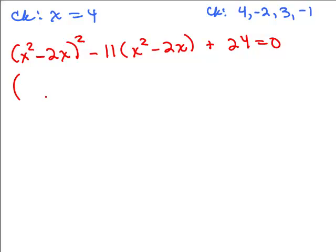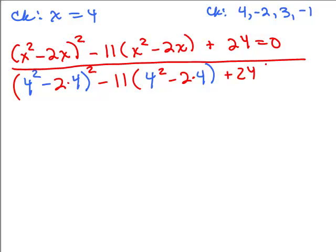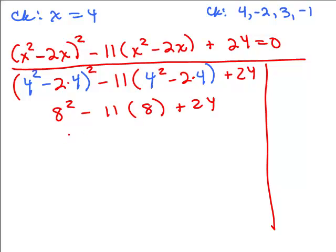We're going to plug in 4 for x. So I have (4²-2×4) and that whole thing is squared. And then I'm going to put 4²-2×4, and I'm going to add 24. And we're going to simplify that. So I have to simplify in the parentheses. That's going to be 16-8, so that's 8². And then here in parentheses I'm going to get 16-8 again, so that's 8. So I have 64-88+24 and that's 0. So 4 checks. That's the solution.